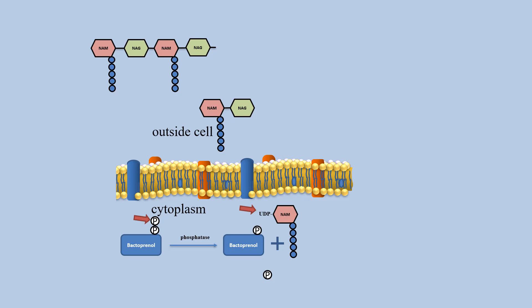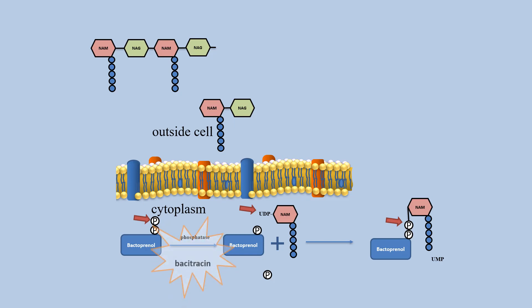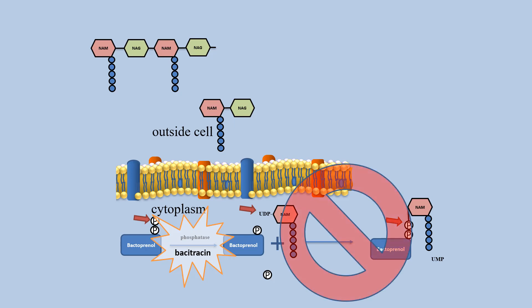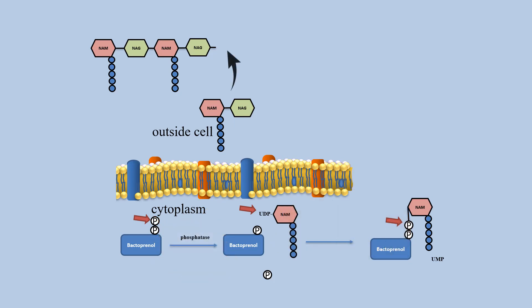Now that bactoprenol has one phosphate group, it is able to link to the next UDP-NAM. If bactoprenol does not lose the phosphate group, it will not be able to bind to the next UDP-NAM molecule, and peptidoglycan synthesis will stop at this stage. This is how bacitracin inhibits peptidoglycan synthesis — by preventing phosphatase from dephosphorylating bactoprenol. In the absence of bacitracin, peptidoglycan synthesis does continue.